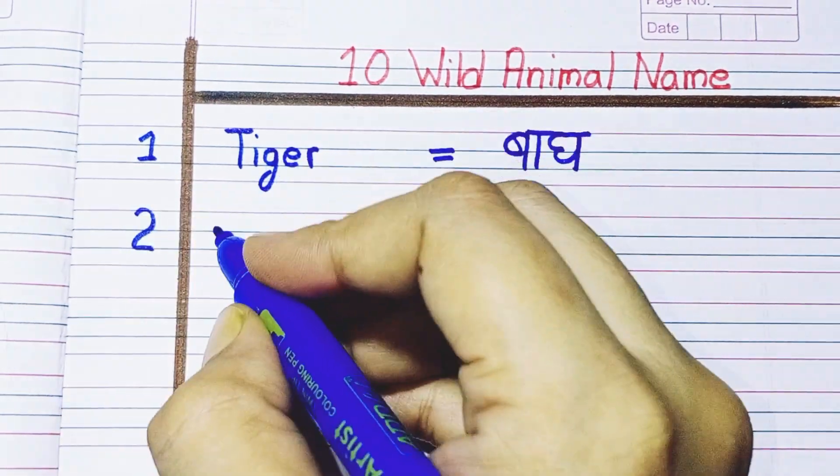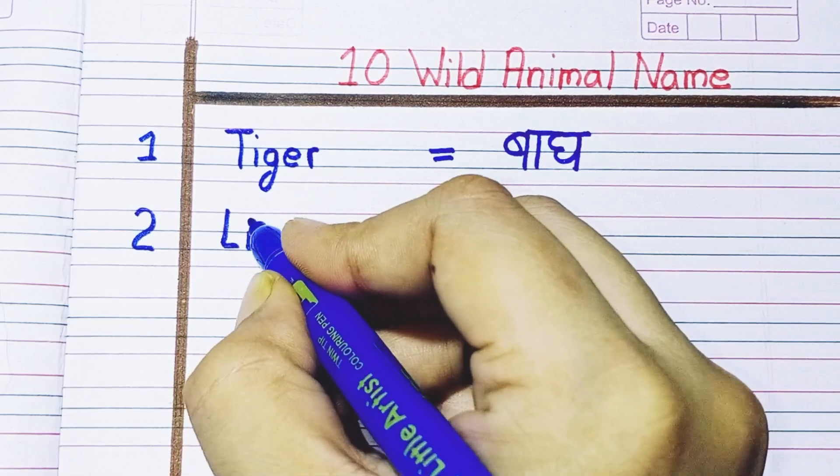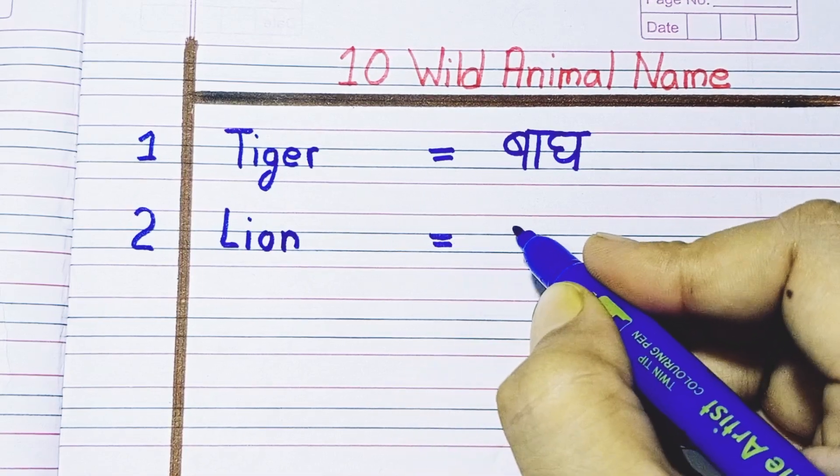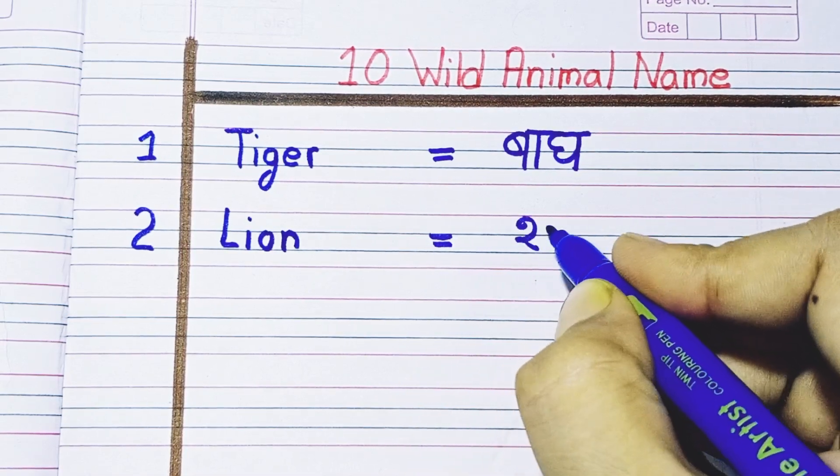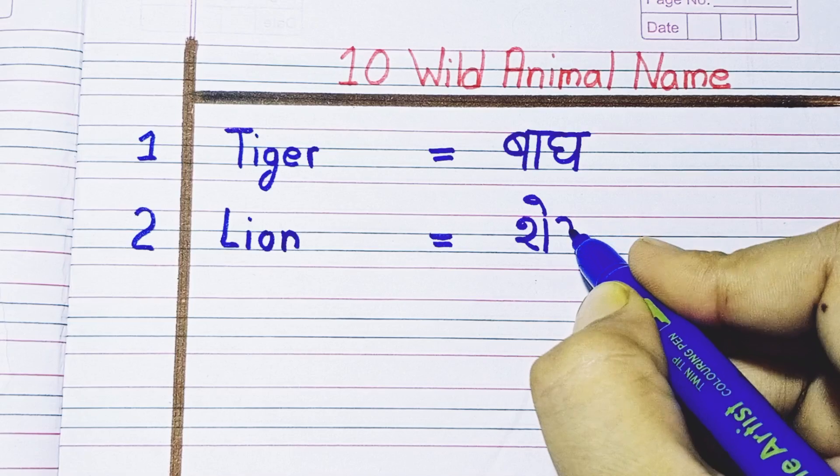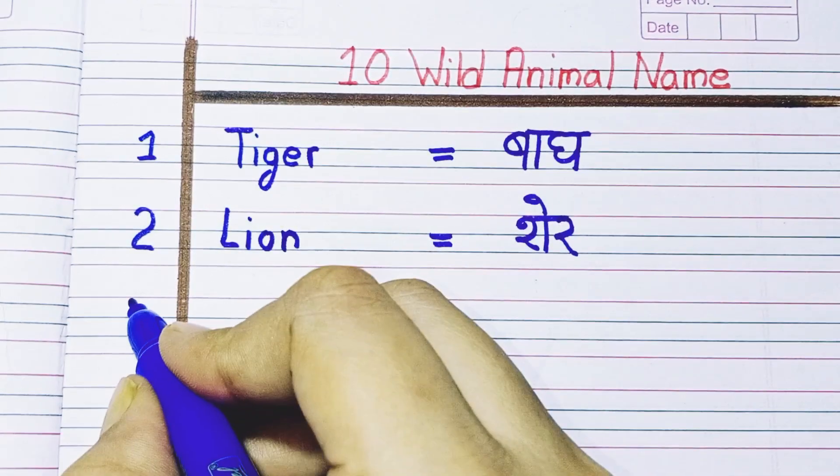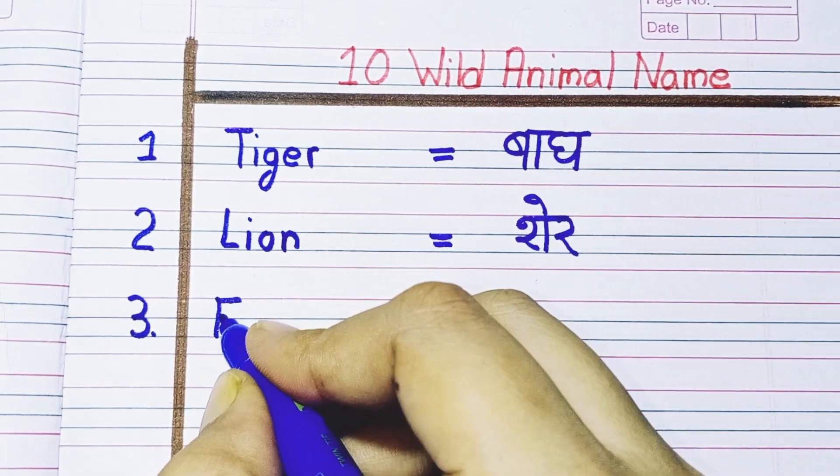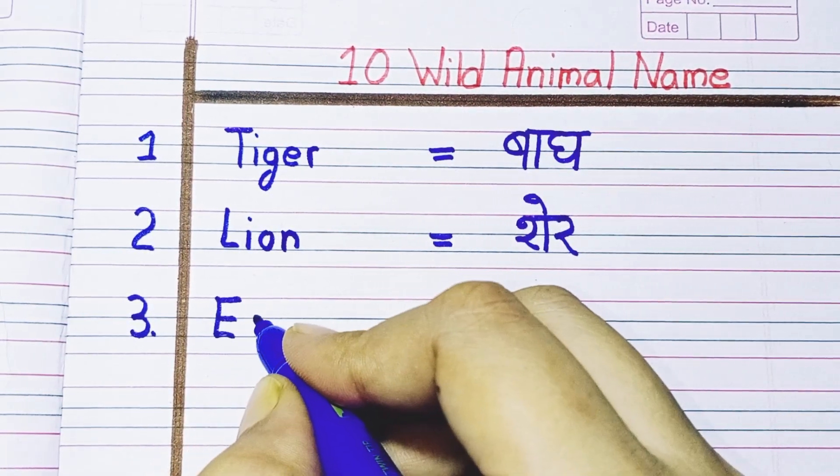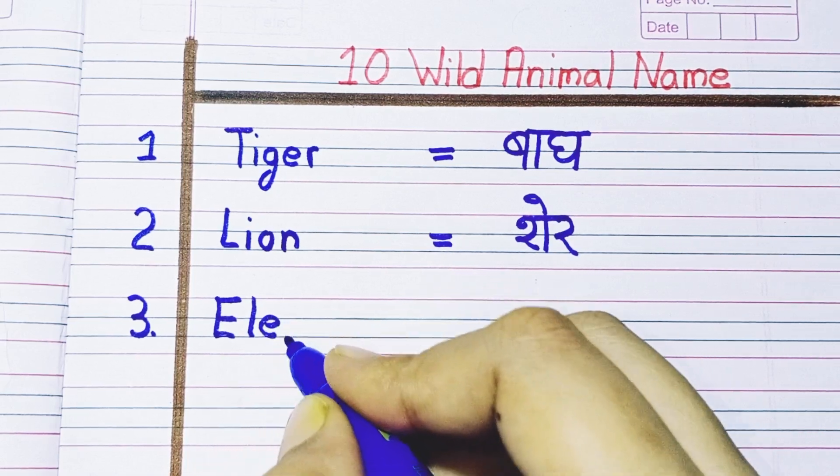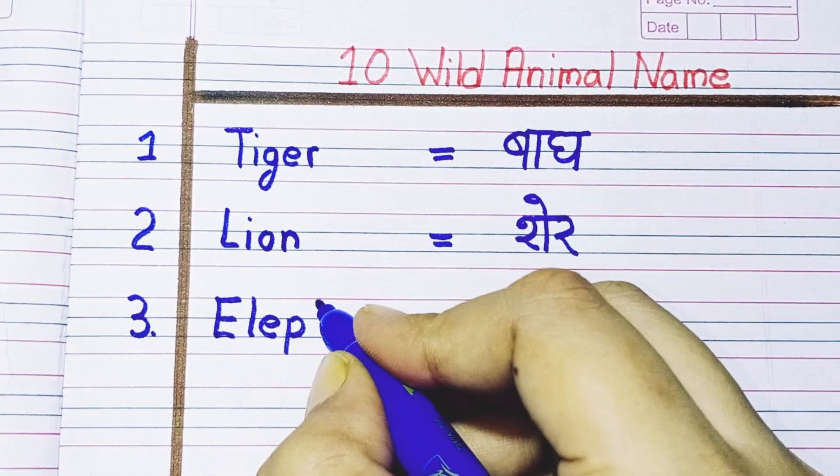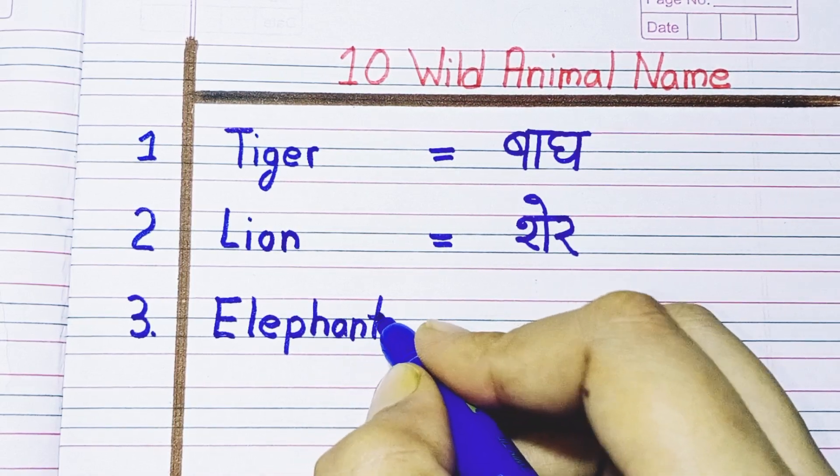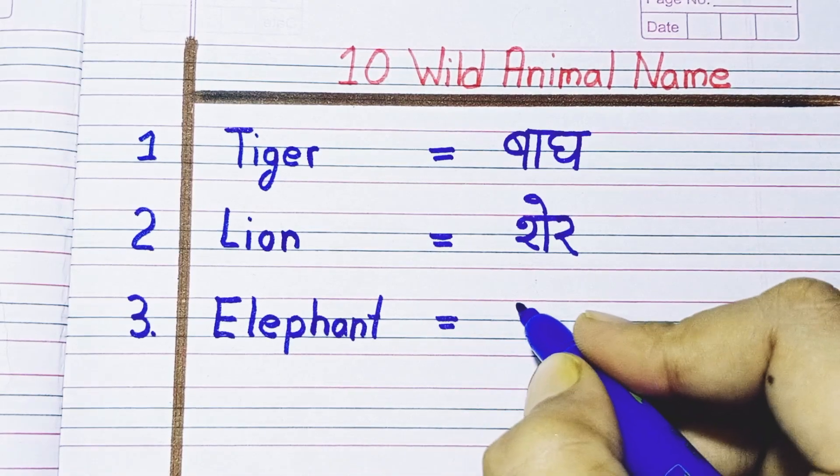Number two: L-I-O-N, lion. Lion means sher. Third number: E-L-E-P-H-A-N-T, elephant. Elephant means hathi.